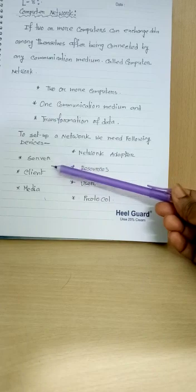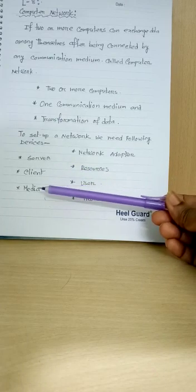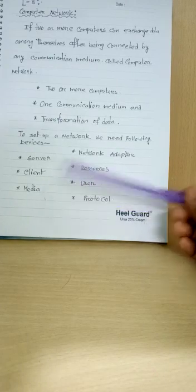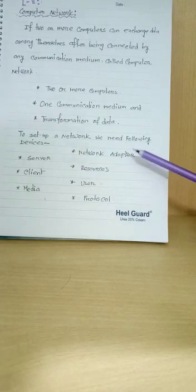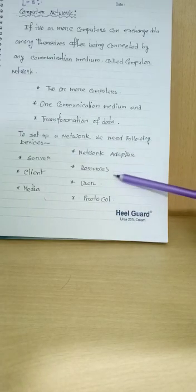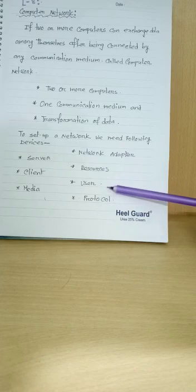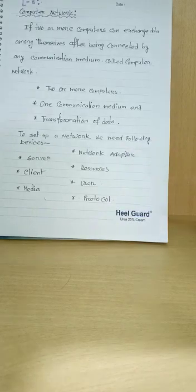First one, server. Number 2, client. Number 3, medium. Number 4, network adapter. Number 5, resource. Number 6, user. And last one is protocol.